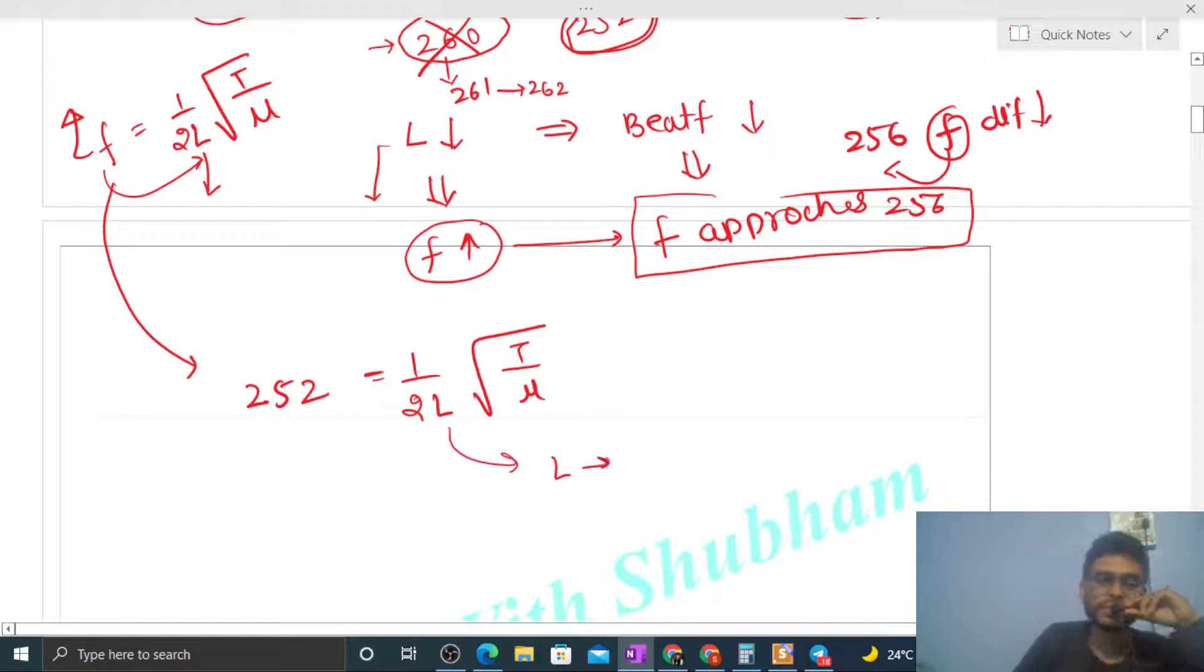So 252 equals 1/(2L) square root of T by mu. Now what is given? As you decrease length, this value will approach 256. So we have to find out: decrease the length by how much so that this f value becomes 256? The f value which is currently 252 should become 256, because when f value becomes 256, no beats will be produced.